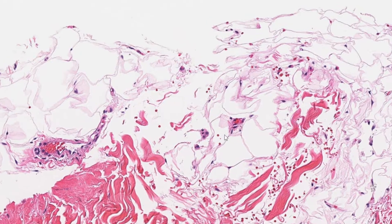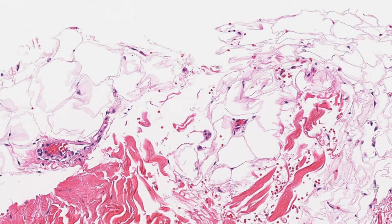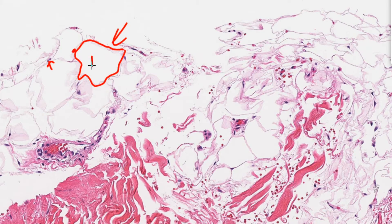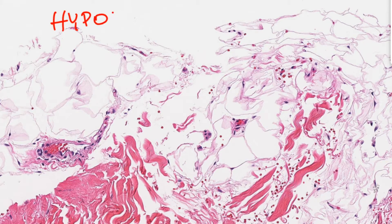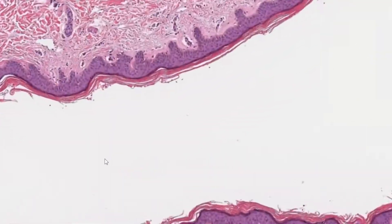Here you can see cells that have a very thin membrane, and somewhere you're going to see the nucleus. These are fat cells, and this whole layer of fat cells with some vessels — here is a blood vessel — is called the hypodermis. So zooming out: we have epidermis here, dermis here, and hypodermis here.